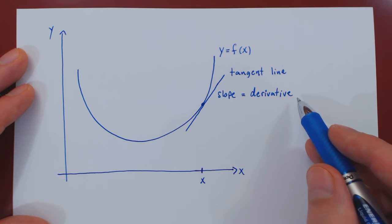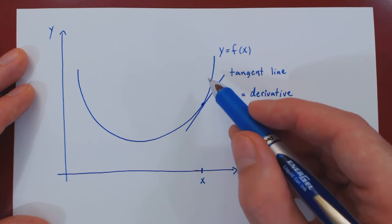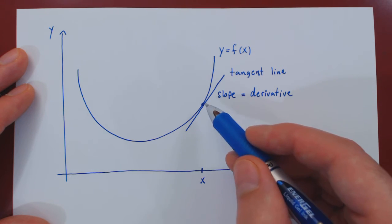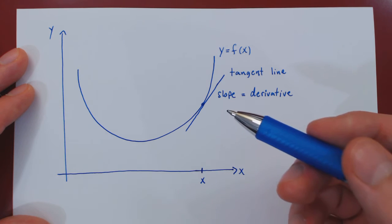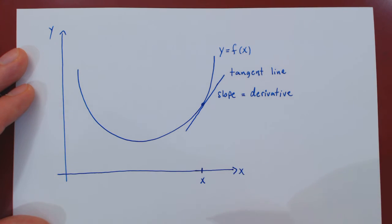So the derivative is a fancy word to say the slope of the tangent line to a curve, and by association, the slope of the curve.